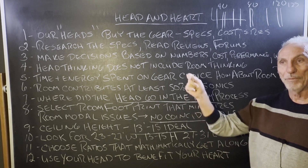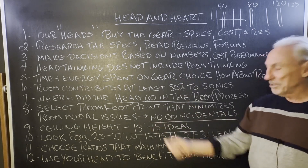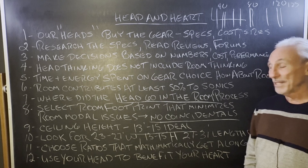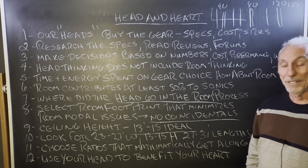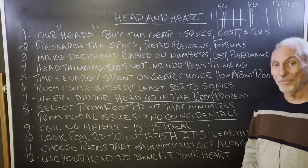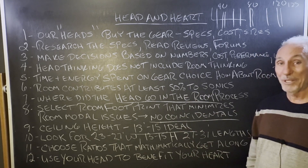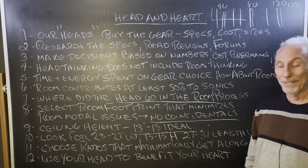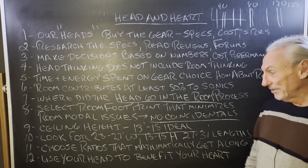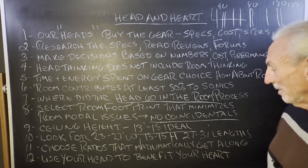At 14 feet you see 30% jumps, and at 15 feet, 40% jumps. So 13 to 15 feet is ideal for a ceiling. It's the laws of physics. I have 15-foot ceilings here in my studio and I still have 80-cycle issues — they can be treated. Choose ratios that mathematically get along — that's the key.